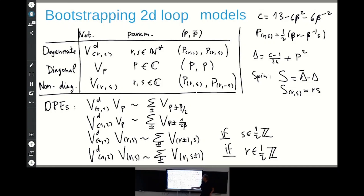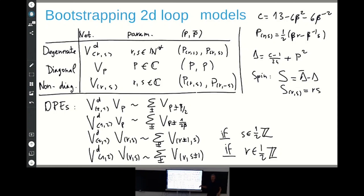Basically, from single-valuedness, the indices R and S for non-diagonal fields get quantized — we get a discrete condition on the spin R times S, which must be half-integer, and also a discrete condition on one of the indices if we assume the existence of some degenerate field. We will not assume we have both degenerate fields simultaneously, as that would be too restrictive and the model would reduce to a non-diagonal minimal model with rational central charge. So we assume we have only one of these degenerate fields.